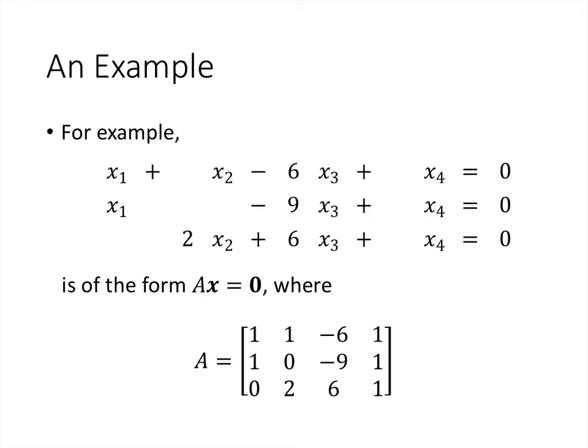So here's an example. Here's a system of linear equations, and it's homogeneous because all of these right-hand side numbers are all zeros. Now we can write that in the form Ax equals zero, where our matrix A is again just the coefficients in the normal way that we do this. We've got 1x₁, 1x₁, and 0x₁, and so that's why our first column is 1, 1, 0. For x₂, we have 1x₂, 0x₂, and 2x₂, and that's why our second column is 1, 0, 2, and so on.